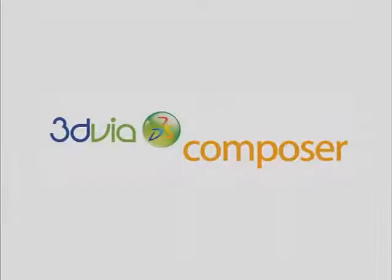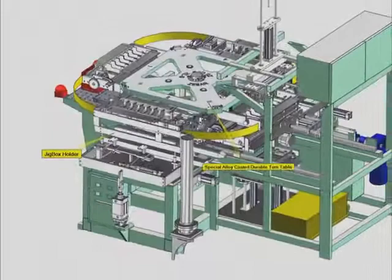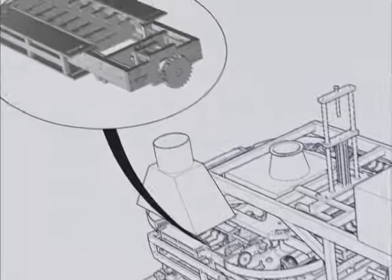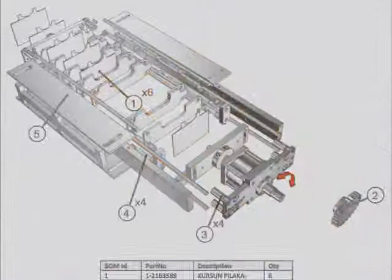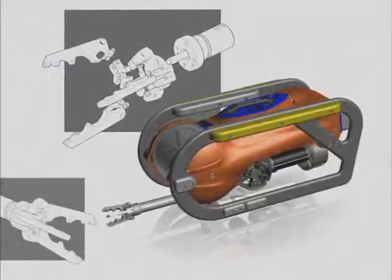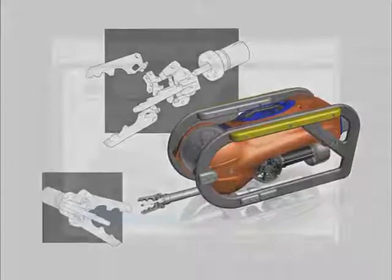The answer is 3DVIA Composer. 3DVIA Composer is a 3D software product that lets you create high quality product graphics and interactive animations directly from the 3D data that product designers and engineers create in their CAD systems. This is much more efficient than creating documentation from scratch after the product is manufactured. The strong connection between CAD and 3DVIA Composer keeps documentation absolutely current.